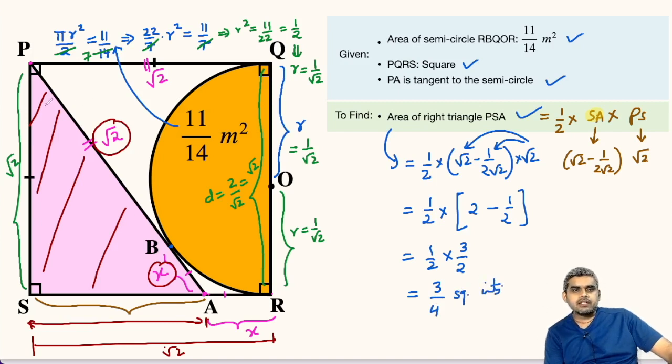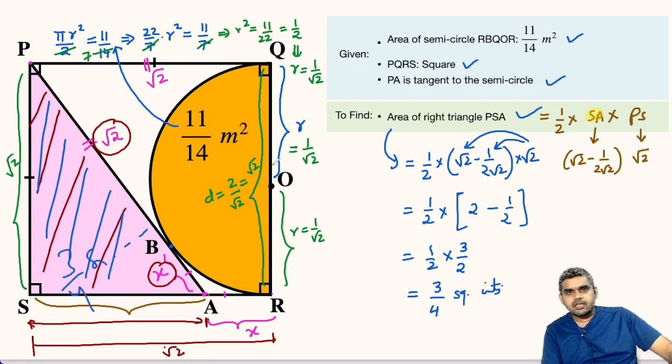So, the area of this triangle PSA is 3 by 4 square units. If you want to get more such videos, do subscribe to my channel. See you in the next video.